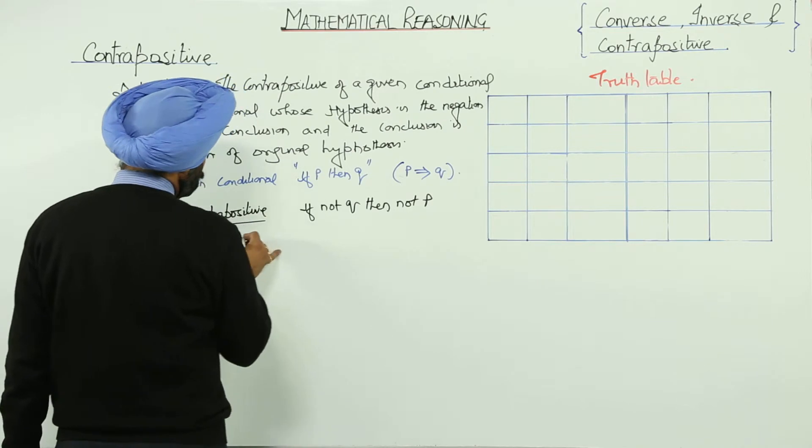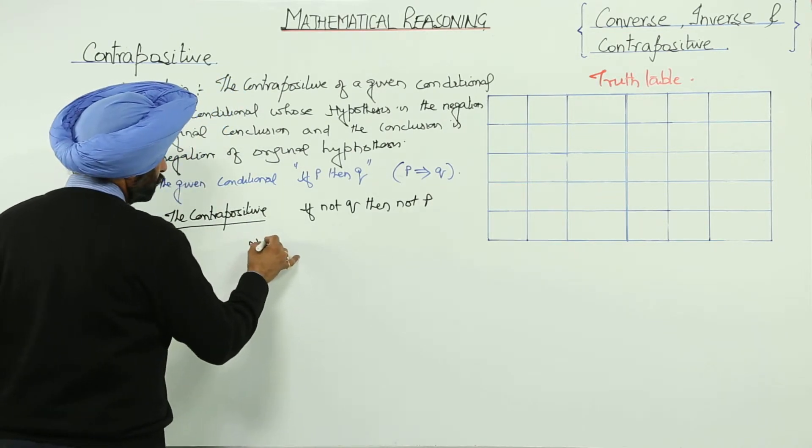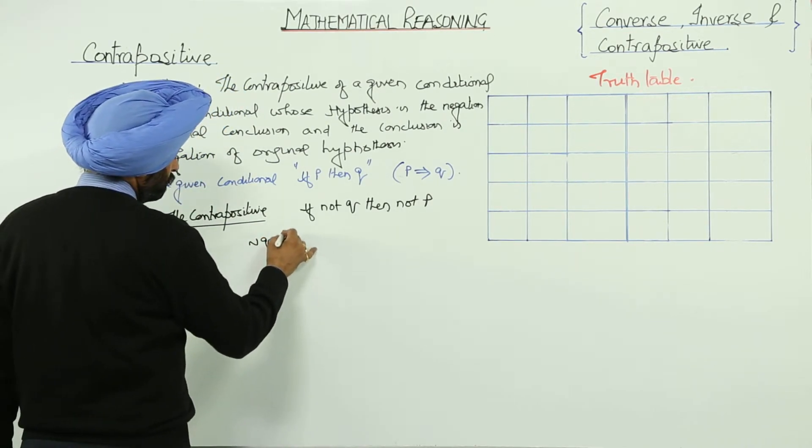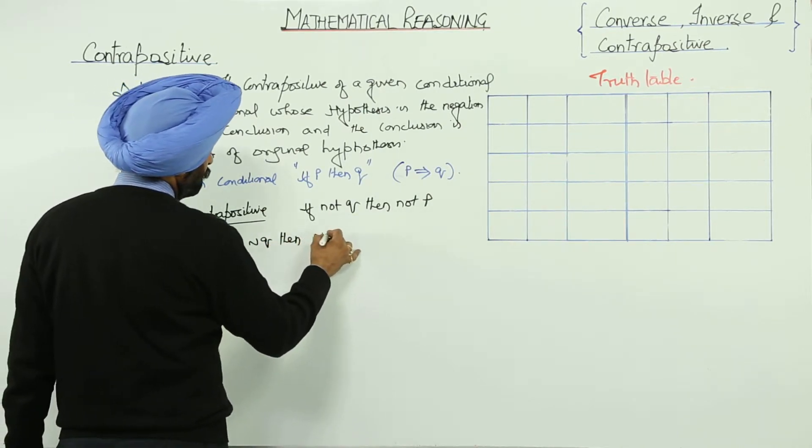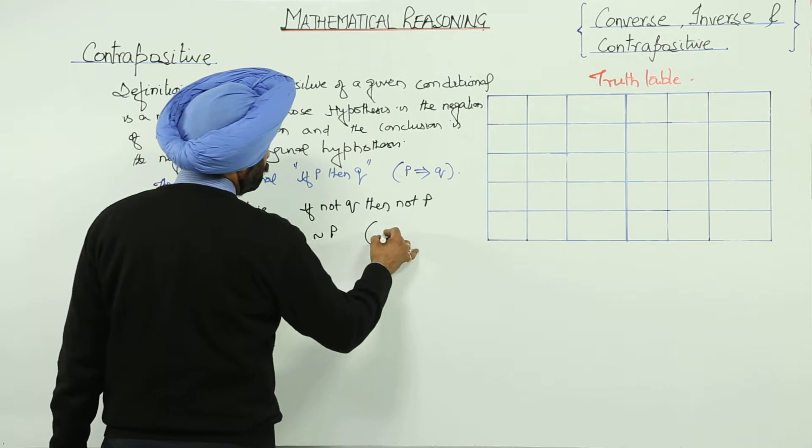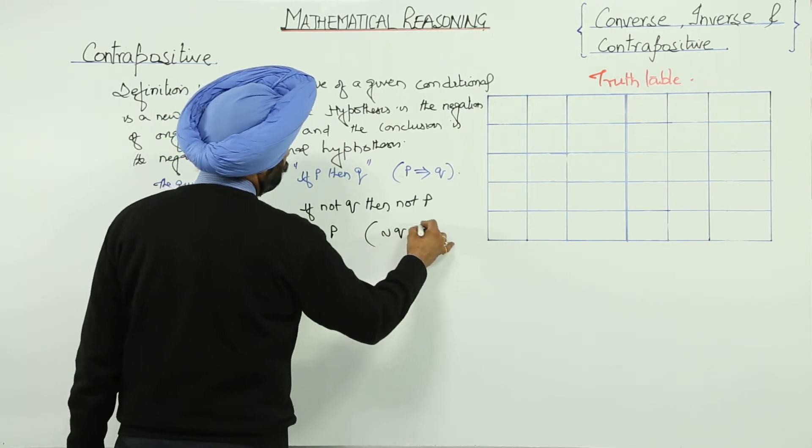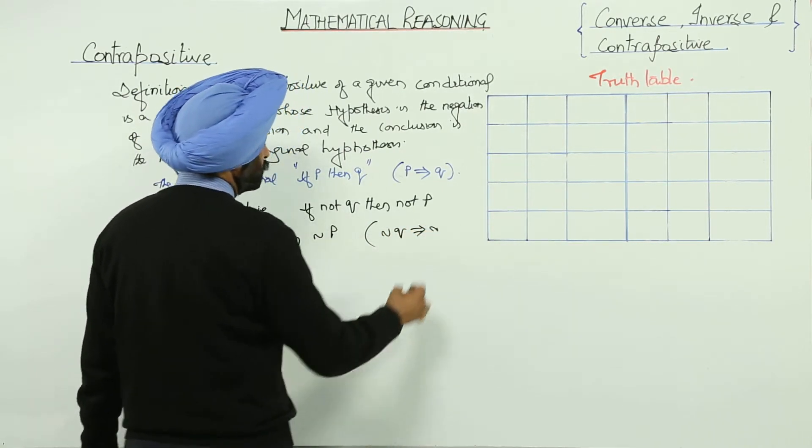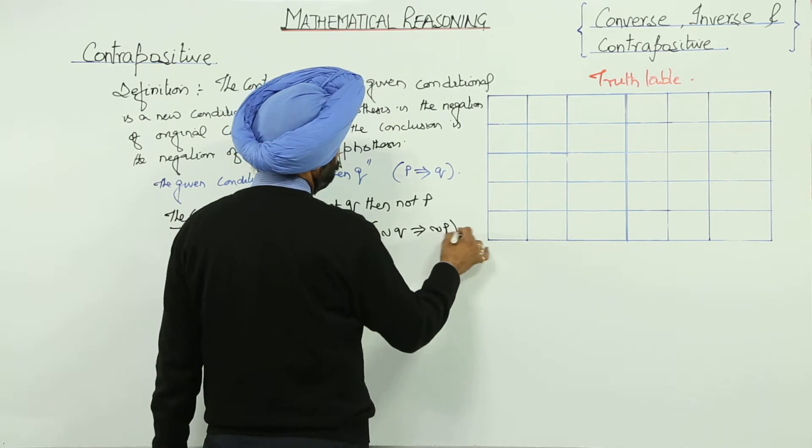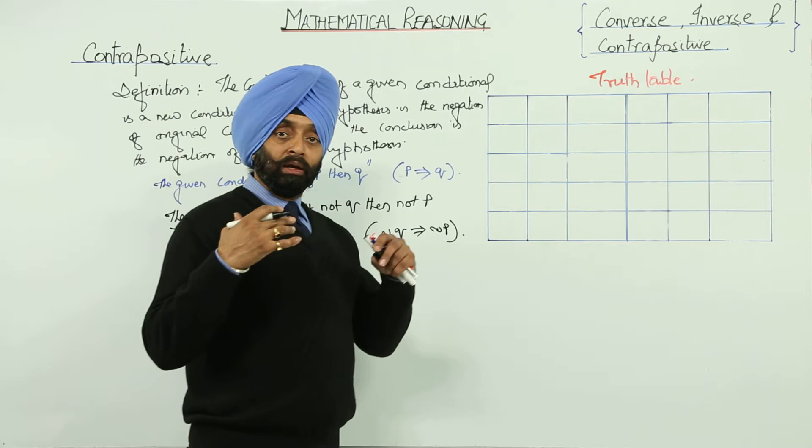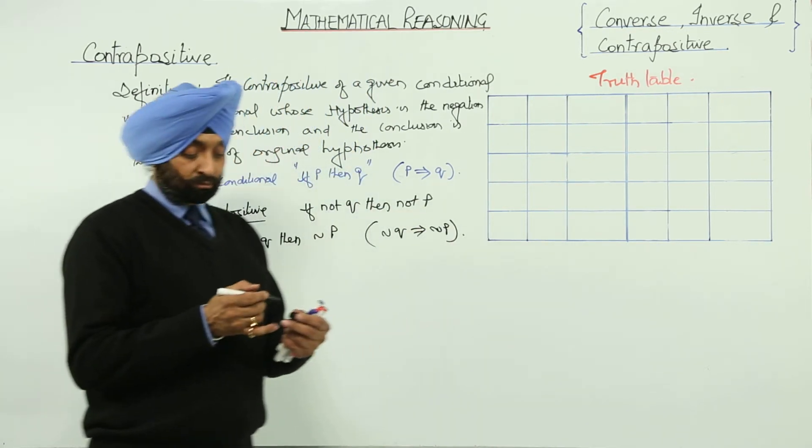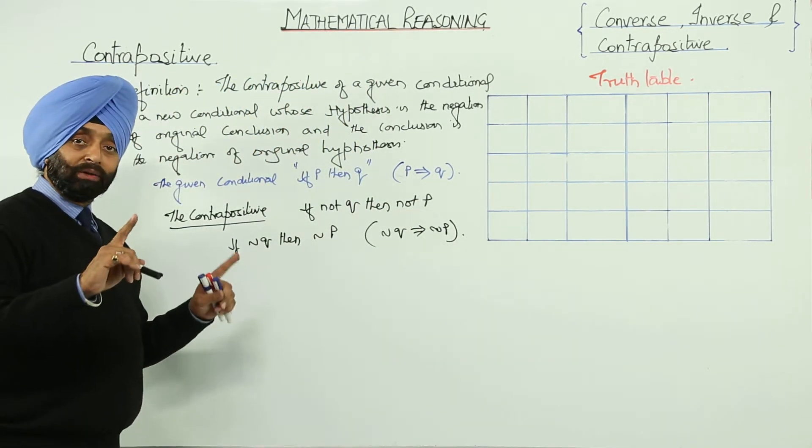So, not Q, we can write it negation of Q. Then, if negation of Q then negation of P. Now, we can write it negation of Q implies negation of P. This is the contrapositive, the converse part of the inverse. Okay? Converse part for the inverse.